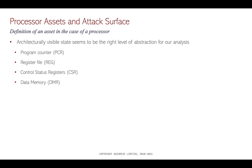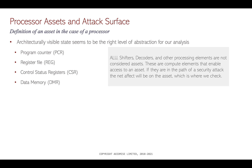Processor assets and attack surface — let's define this. This is the most tricky part, because theoretically everything in a processor could be considered an asset, but not really — anything that is not architecturally visible is not required to be an asset, because if it's not architecturally visible, it's not software visible. So we've looked at program counters, registers, control status registers, data memory, and data caches as the assets to analyze. ALU, shifters, decoders, and other compute elements are not considered assets — they affect the value of an asset, and if they are in the path of a security attack, the net effect will be on the asset, which is where we check.